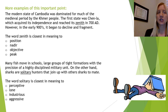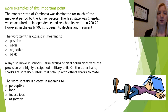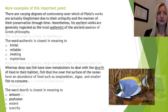Now we're looking at the word zenith. It reached its zenith in 700 AD; however, in the early 900s it began to decline and fragment. So zenith must mean its high point, its peak — the fourth answer is correct. For the next example, fish move in schools, meaning they move in groups. On the other hand, sharks are solitary, so solitary must mean something different than being in a group. Solitary means alone — the second answer, lone, is correct.